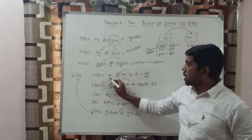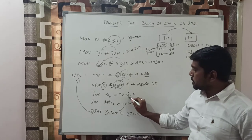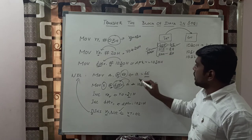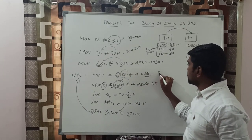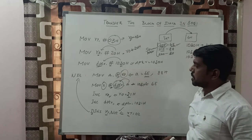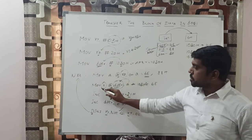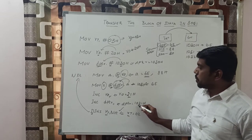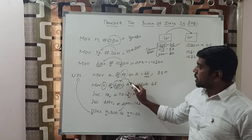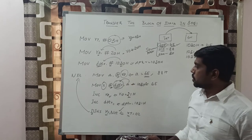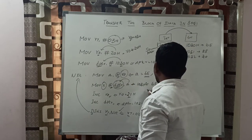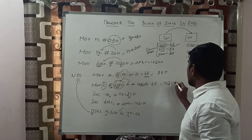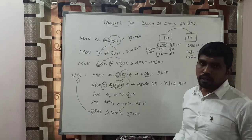Now MOV A, @R0 — R0 content is 21h. The data at address 21h is 88h, so this content is transferred to the accumulator. The accumulator content is now 88h. Then MOVX @DPTR, A — DPTR value is 1031h. The accumulator content 88h is transferred to that external memory location 1031h, and the data stored there is 88h.